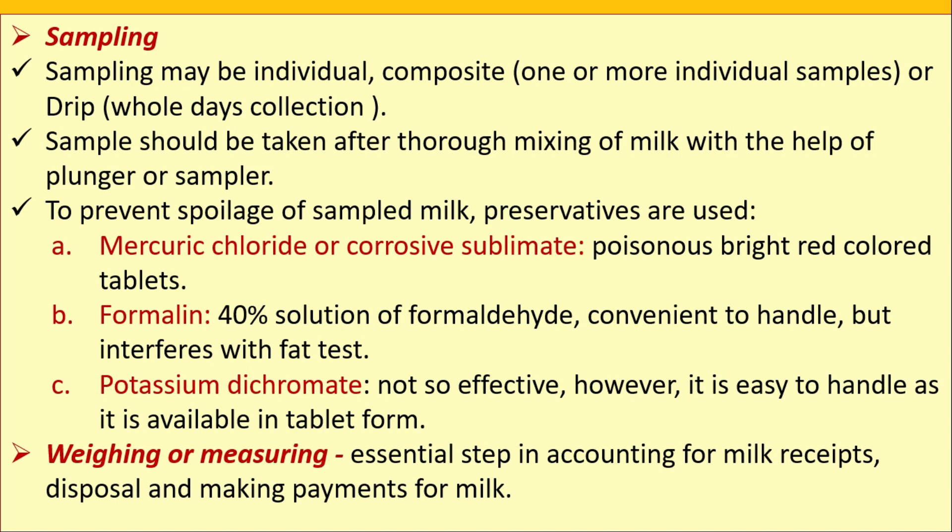Sampling may be individual, composite, or drip sample, and should be taken after thorough mixing of milk using a plunger or sampler. To prevent spoilage, milk preservatives are used: mercuric chloride (corrosive sublimate) — poisonous bright red colored tablets; and formalin (40% solution of formaldehyde) — convenient to handle but interferes with fat test.